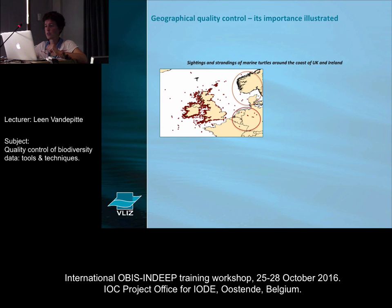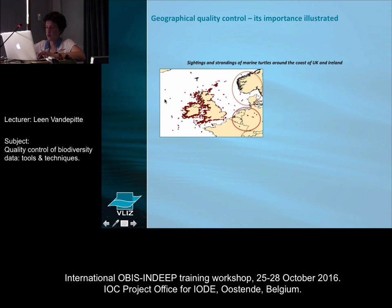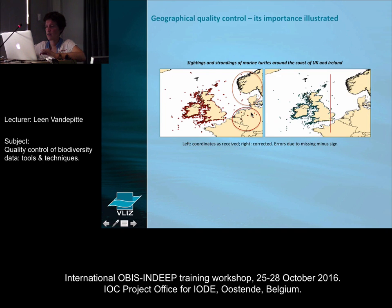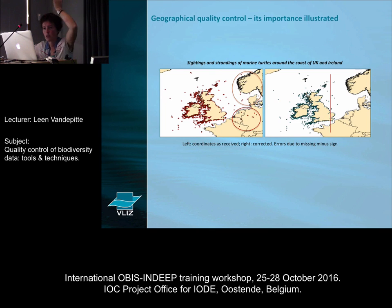Last example: 'Sightings and strandings of marine turtles around the coast of the UK and Ireland' — which looks really good, but has some very strange points elsewhere. What happened is that the minus sign was missing. Because people forget that the meridian is there and that they have to have that minus sign. Again, very easily spotted if you plot it, and very easily corrected.